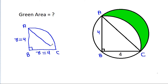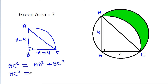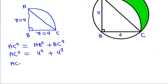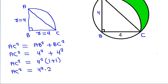So AC squared will be equal to AB squared plus BC squared. AC squared is equal to 4 squared plus 4 squared, which is 4 squared times 2, so AC will be equal to 4 times square root of 2.